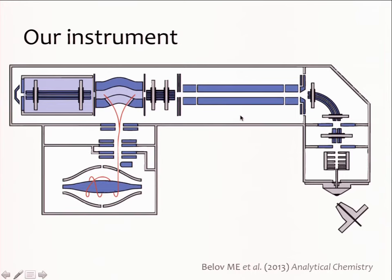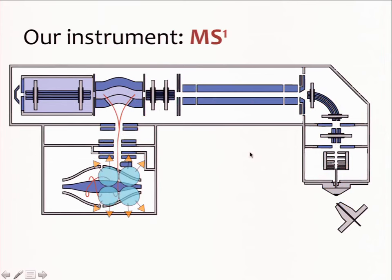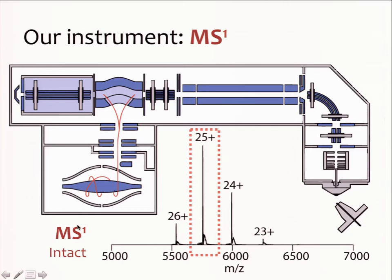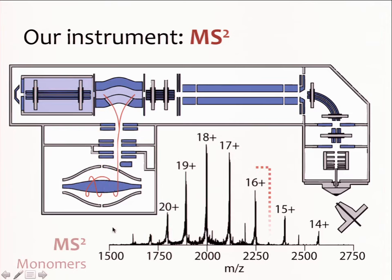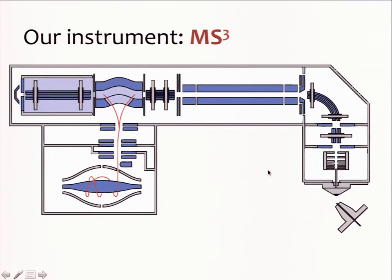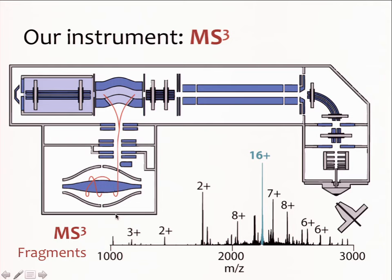We use a three-tier approach. In the first tier, we analyze the full intact complex — this is our MS1. From there, we can isolate a single charge state of the complex, activate the complex, eject monomers, and detect the monomers — this is our MS2, referring to the analysis of ejected monomers. In our third tier, we activate the complex, eject monomers, isolate a single charge state of the monomer, fragment the monomer, and detect the fragment ions — this is our MS3. So to reiterate: MS1 is our intact complex, MS2 is our ejected monomers, and MS3 is our fragment ions.